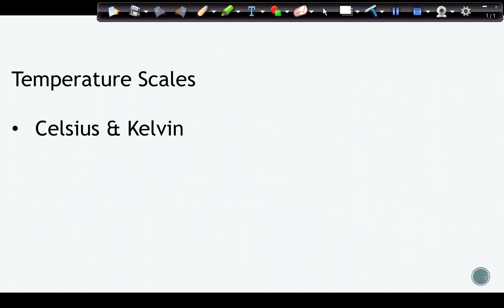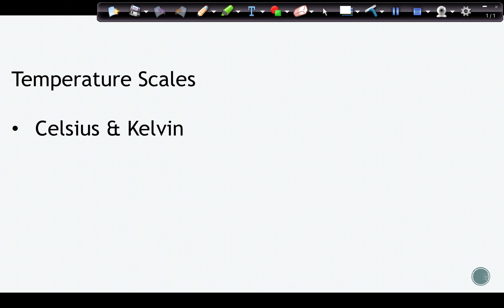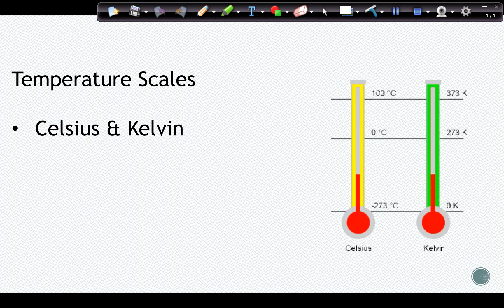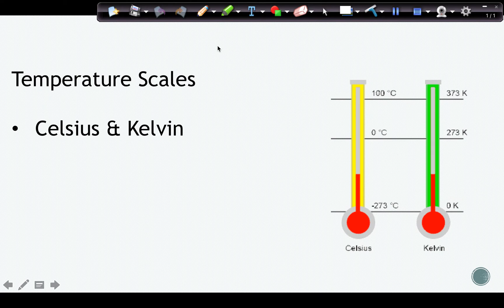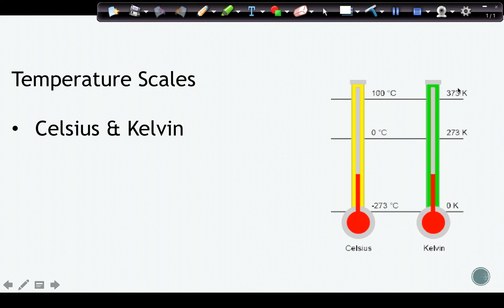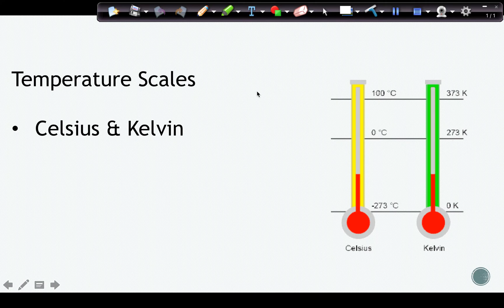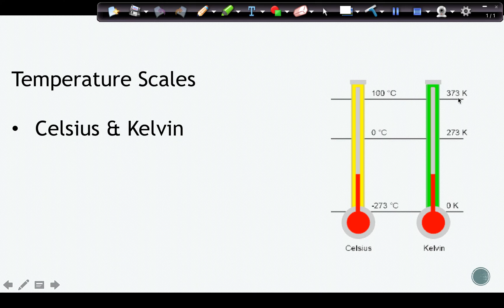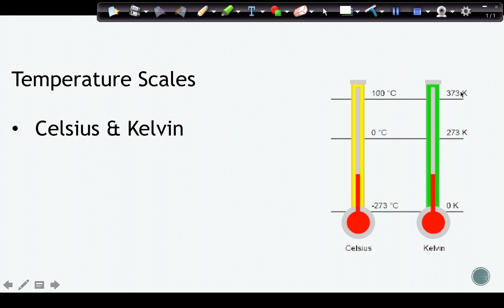When we talk about our temperature scales, again, we usually use Celsius and Kelvin for chemistry. And on the Celsius scale and the Kelvin scale, if we compare, we know that we have 100 degrees Celsius is 373 Kelvin, 0 degrees Celsius is 273 Kelvin, because the Kelvin scale is just 273 units higher than the Celsius scale. The temperature is the same here, but the number for Kelvin is 273 higher.